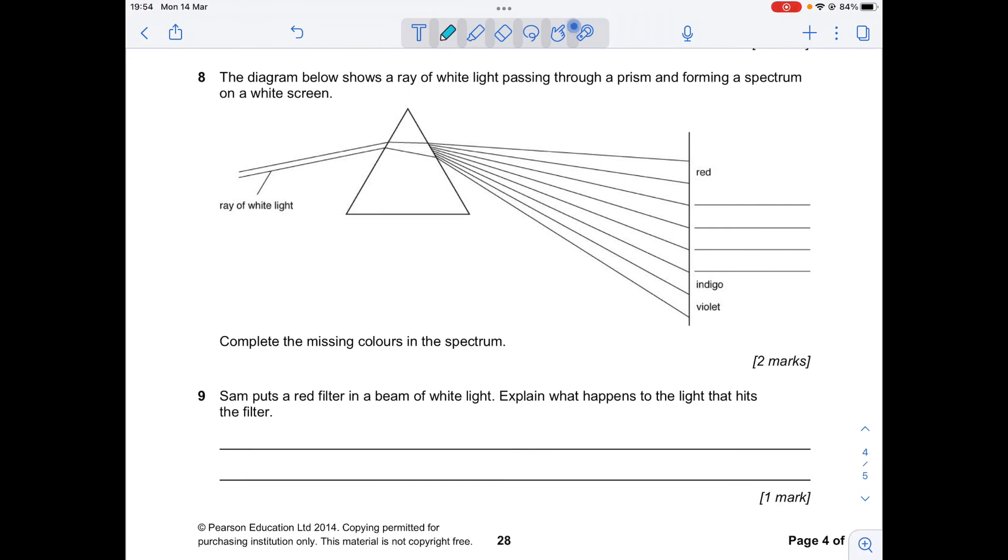The diagram below shows a ray of white light passing through a prism and forming a spectrum on a white screen. Complete the missing colors in the spectrum. So you remember we learned Roy G. Biv. So red, orange, yellow, green, blue, indigo, violet.